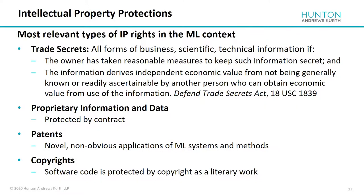The types of IP that are relevant in this ML context: trade secrets are probably the most important. Under the Federal Defend Trade Secrets Act, business, scientific, and technical information qualifies if the owner has taken reasonable measures to keep it secret and the information derives independent economic value from not being generally known or readily ascertainable. There's a lot of data, information, know-how, and algorithms that fall into this definition. Proprietary information and data isn't strictly an IP right — the only IP right would be trade secrets — but there's a lot of information that may not satisfy the legal definition of trade secret but is still valuable and protected by contracts.